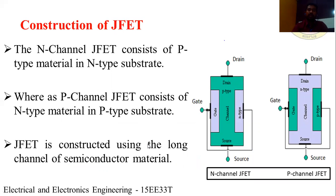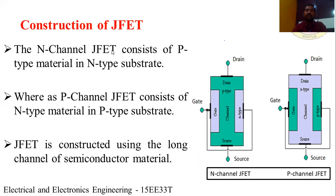Now let's come to the construction of JFET — junction field effect transistor. In JFET, we have two channels: n-channel JFET and p-channel JFET. In n-channel JFET, it consists of an n-type channel. In p-channel JFET, it consists of a p-type channel. JFET is constructed using a long channel of semiconductor material — that is silicon or germanium material.